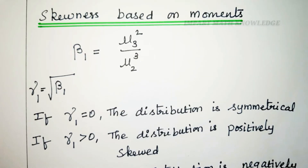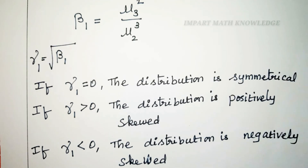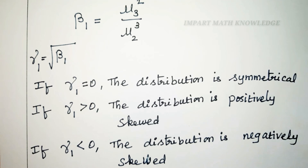Skewness based on moments: the moment measure of skewness is denoted by beta1, where beta1 equals mu3 squared divided by mu2 cubed, and gamma1 equals the square root of beta1. If gamma1 equals 0, the distribution is symmetrical. If gamma1 is greater than 0, the distribution is positively skewed, that is skewed to the right. If gamma1 is less than 0, the distribution is negatively skewed, that is skewed to the left.